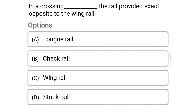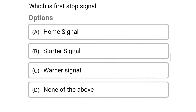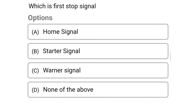Next question: in a crossing, the rail provided exactly opposite to the wing rail — option A: tongue rail, option B: check rail, option C: wing rail, option D: stock rail. The correct answer is option B: check rail.